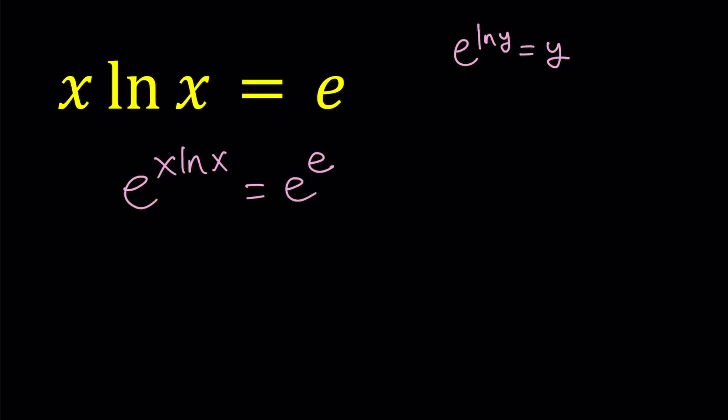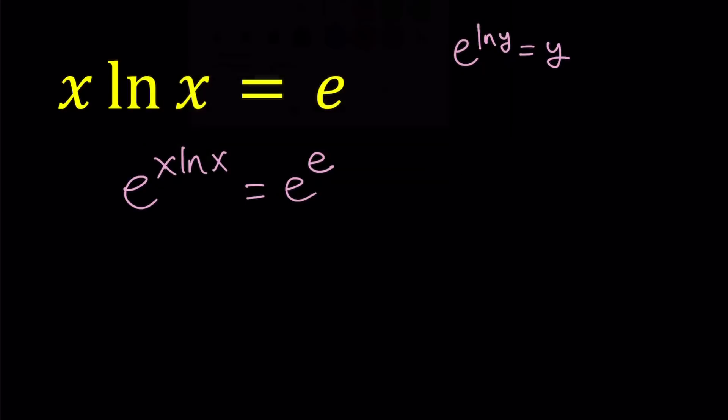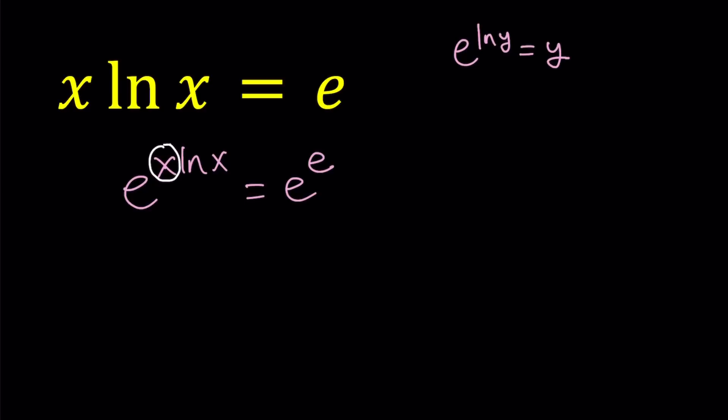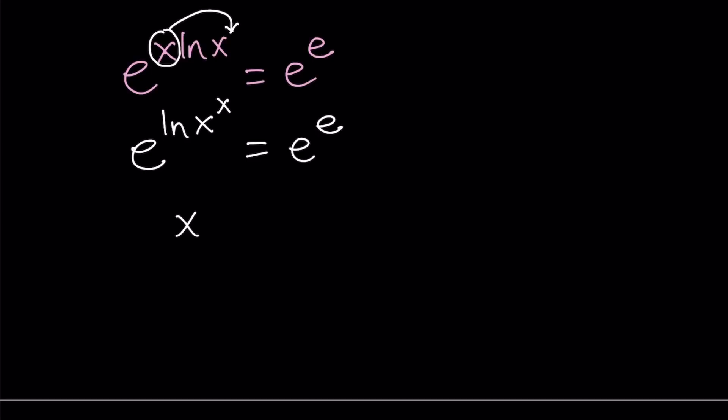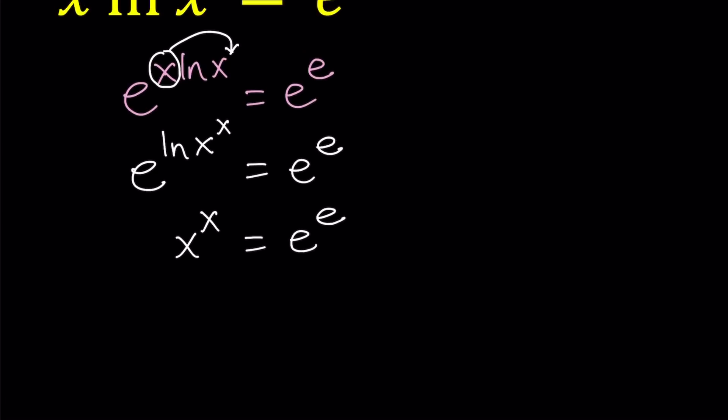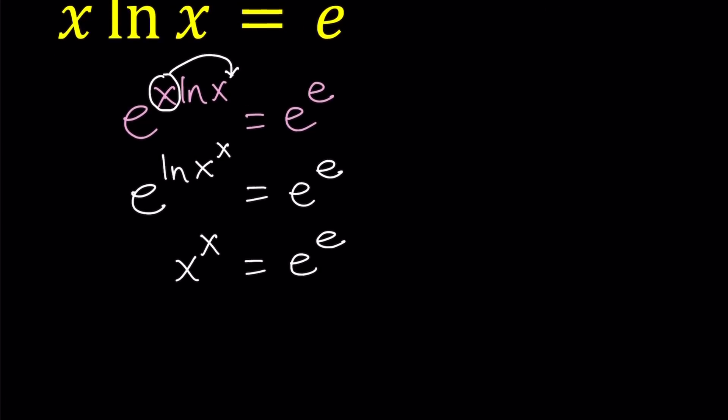But before we do that, we don't have e to the power ln something. We have an x here. So, how do you eliminate or get rid of that problem? You can move the x. So x becomes an exponent. We can write this as e to the power ln x to the power x equals e to the power e.